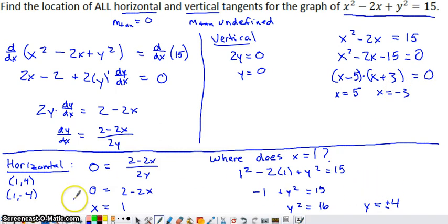Like the horizontal part of the problem, we have two locations with vertical tangents. The first location is (5, 0), and the second location is (-3, 0).